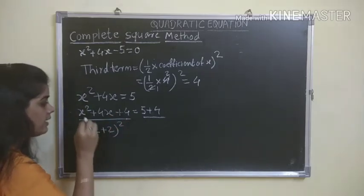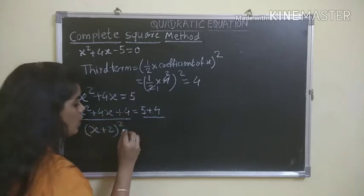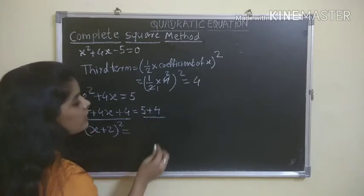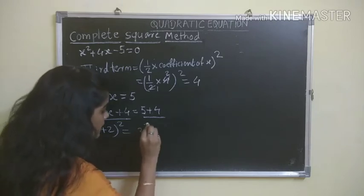This equals 4, which means we have the form a² + 2ab + b². Now here, we have x² + 4x + 4 = 9. 9 can be written as 3².